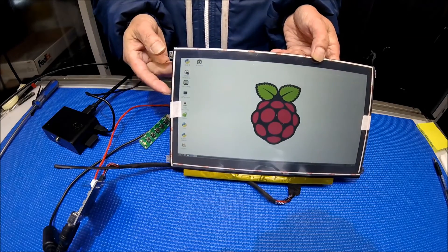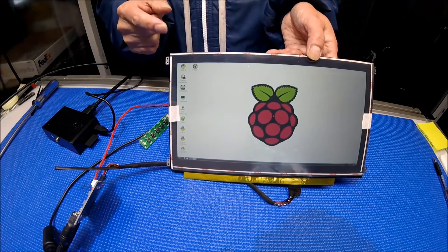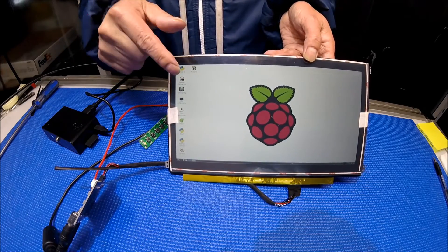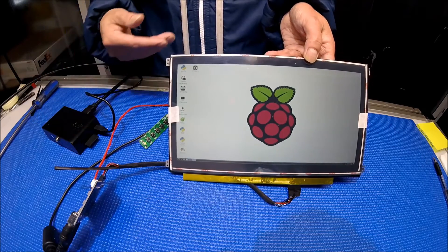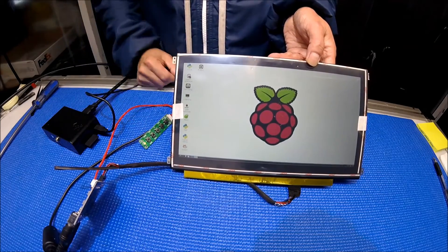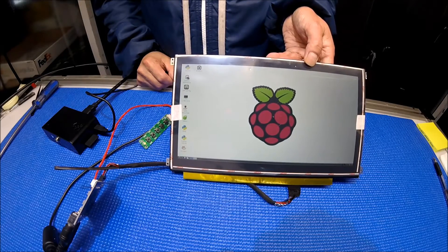We also have an SKD kit for 13.3 inch available, which comes with a 13.3 inch screen with capacitive touch, so you can connect to Raspberry Pi or whatever system you have. Windows system, you can do all the touches. Those are multi-touch. Thank you for watching.